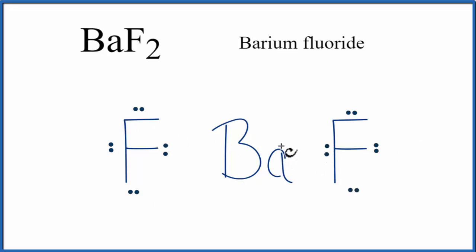So the barium, it's lost 2 valence electrons. Electrons are negative, so the barium's lost 2 negative charges, so now it has a 2 plus charge. The fluorines, each one of those has gained an electron, so it has a negative charge.